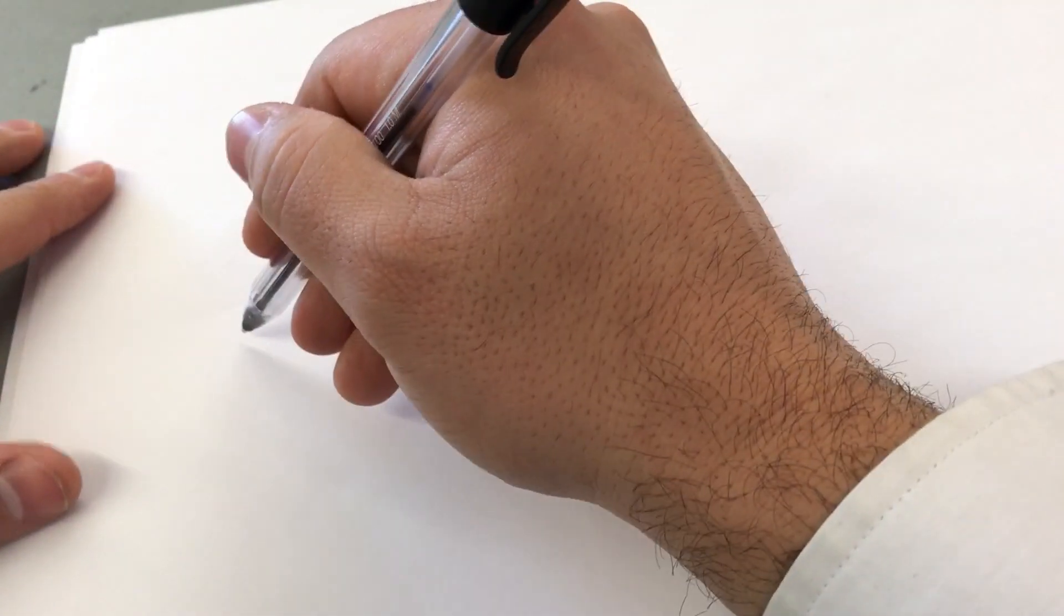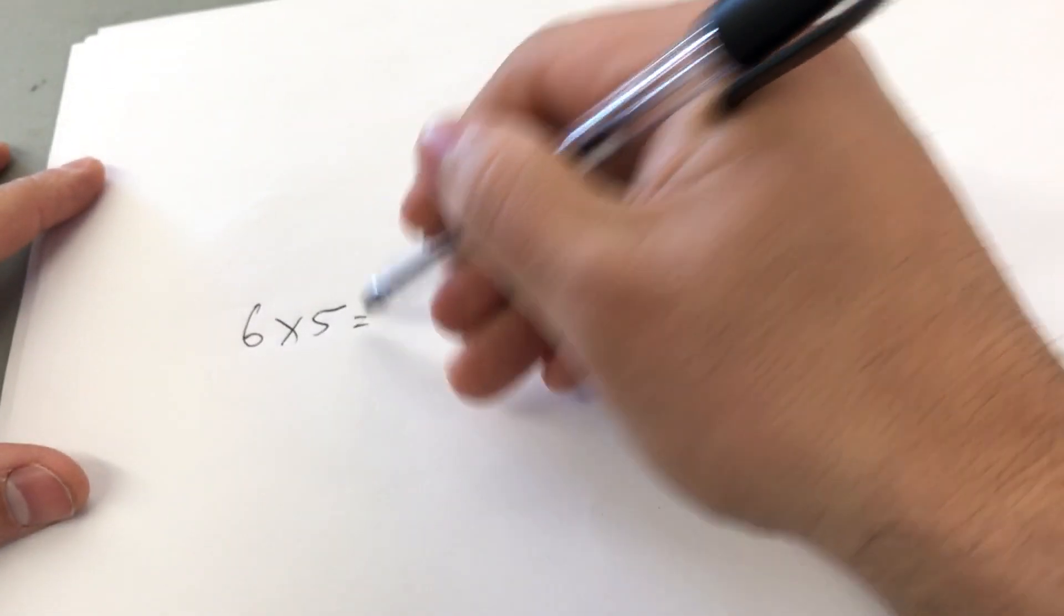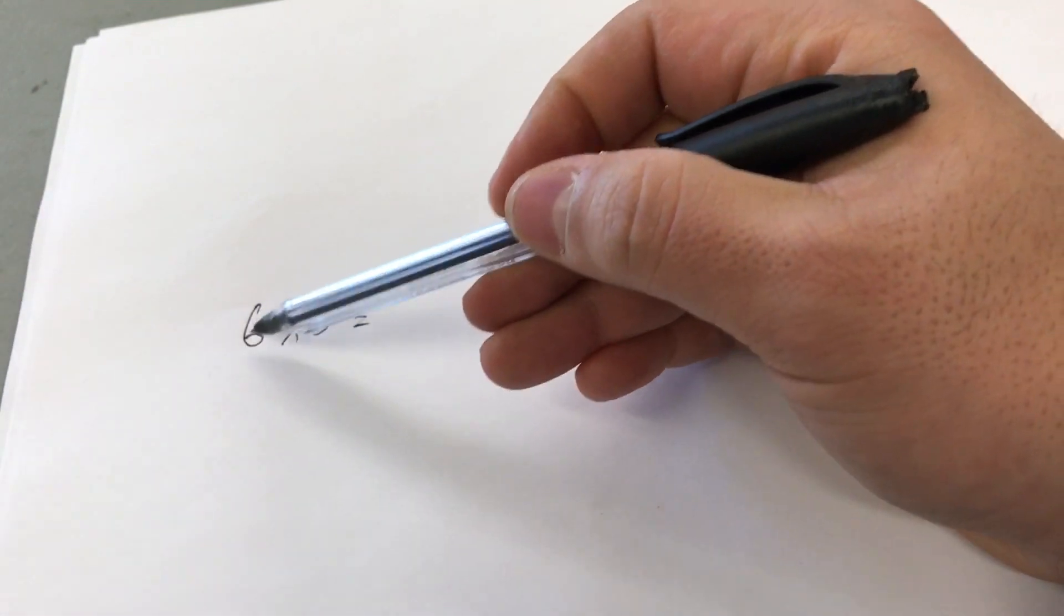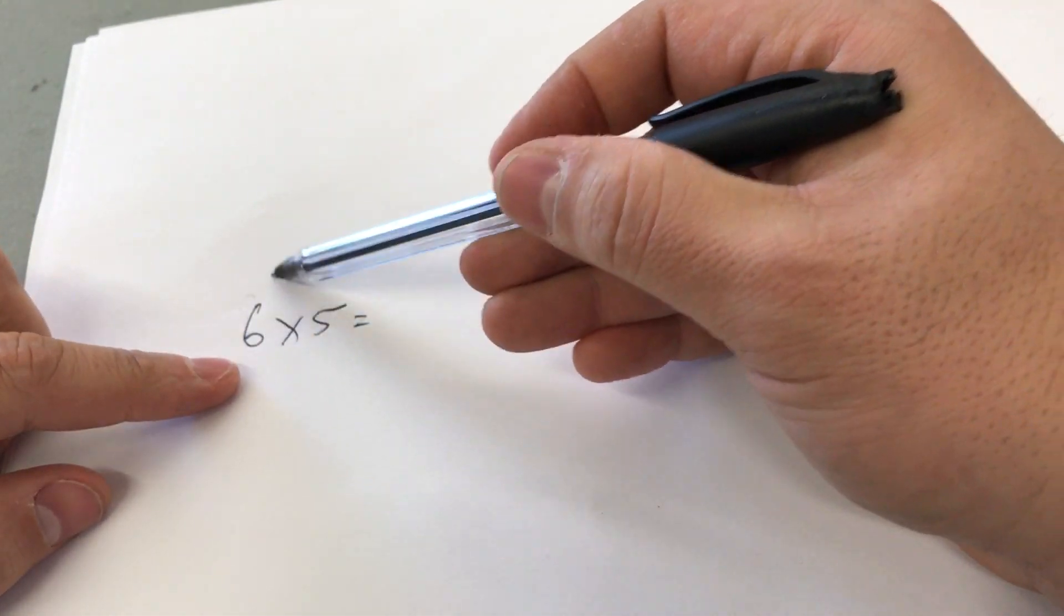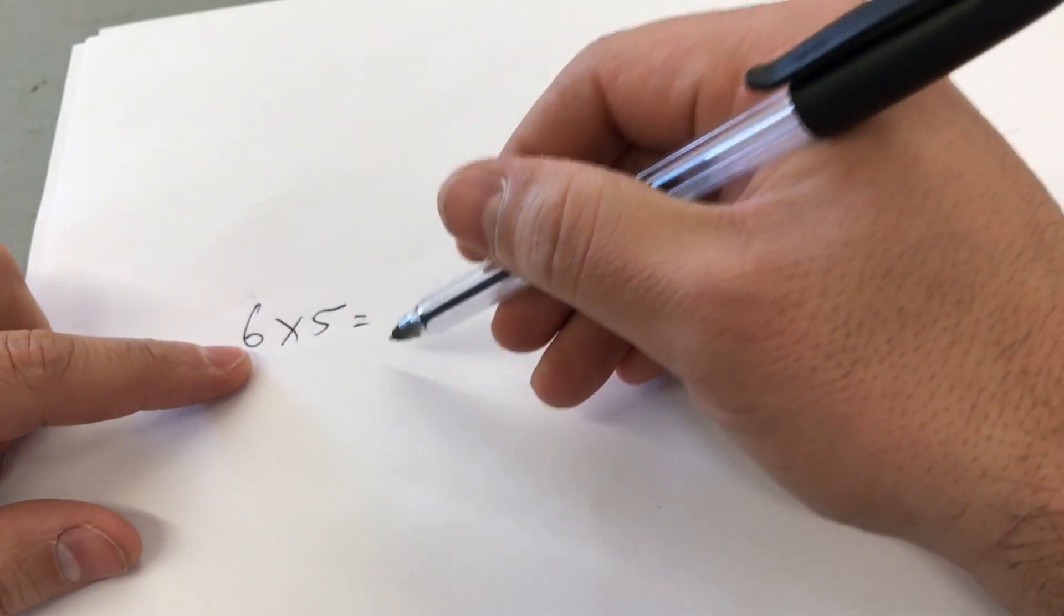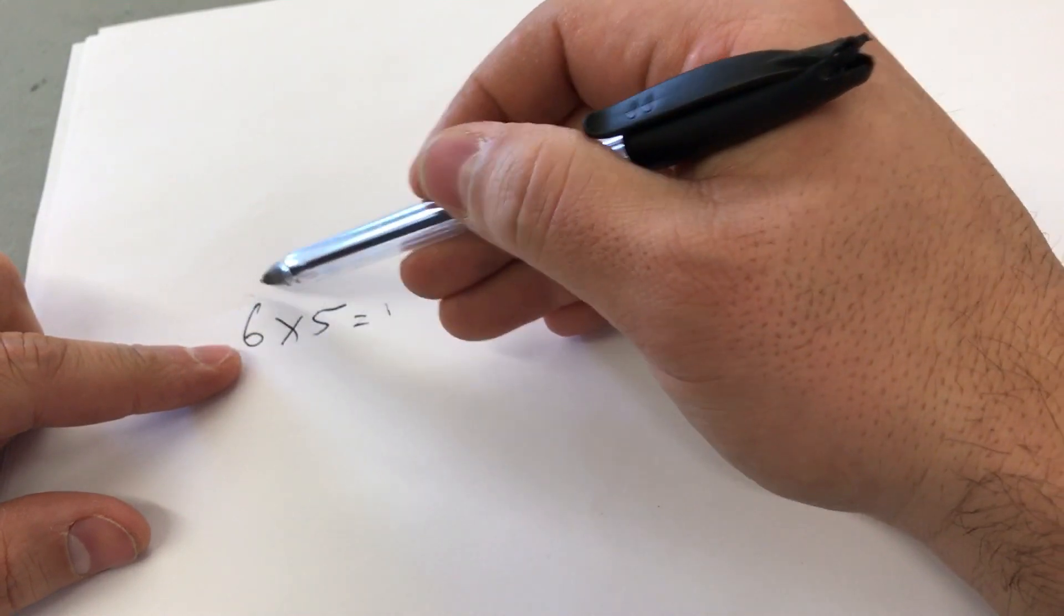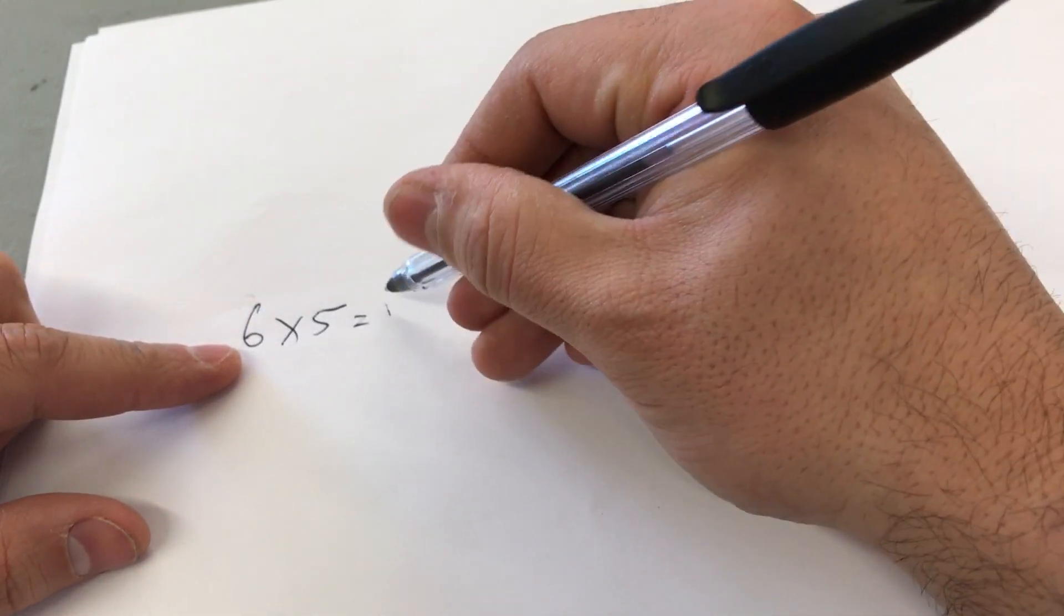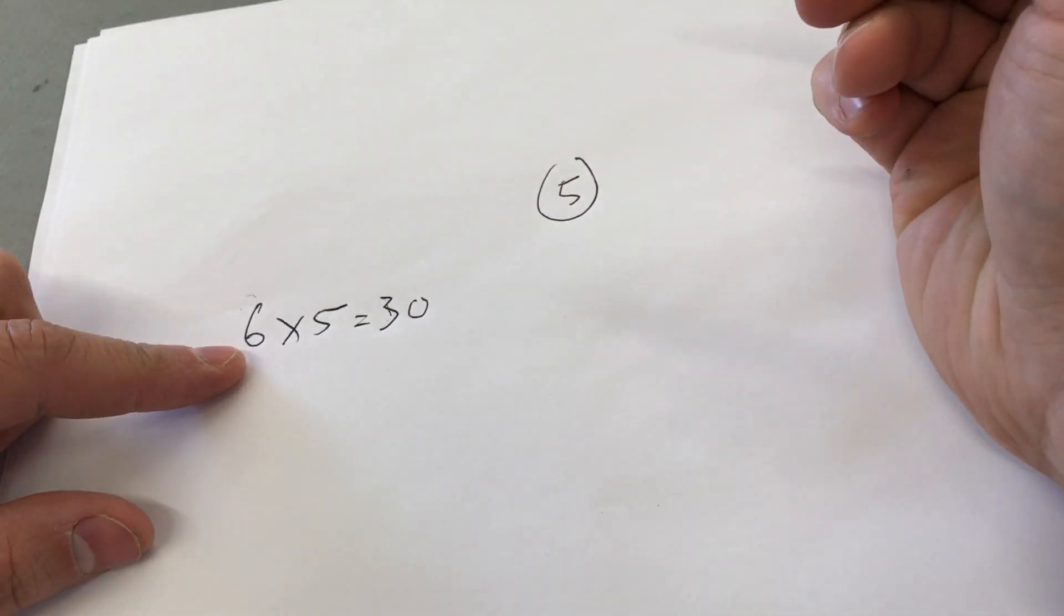Now let's just say for example we're going to start off with small numbers and we'll work our way to bigger numbers. Let's say we had 6 times 5. So what you want to do is you want to take the number that's not 5, which is 6 in this case, and you want to cut it in half and put the number that you get there. So 6 cut in half is 3. So I put a 3 there and then you just simply add a 0, just like that.